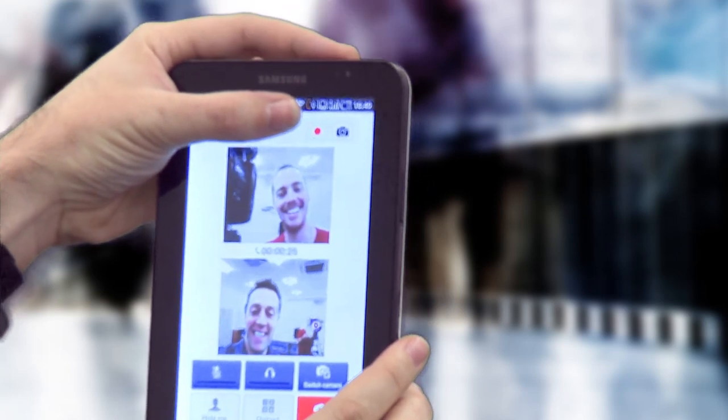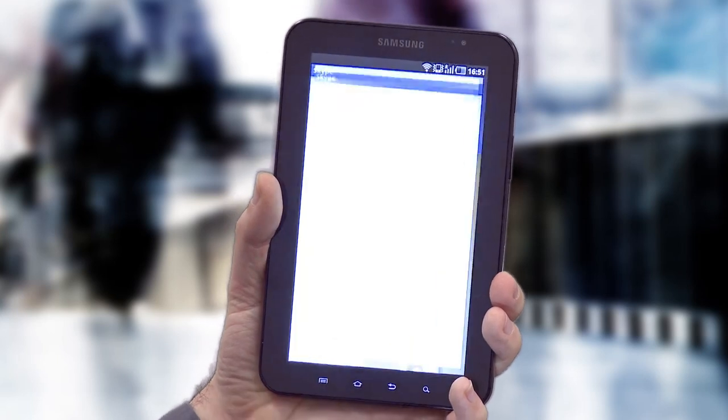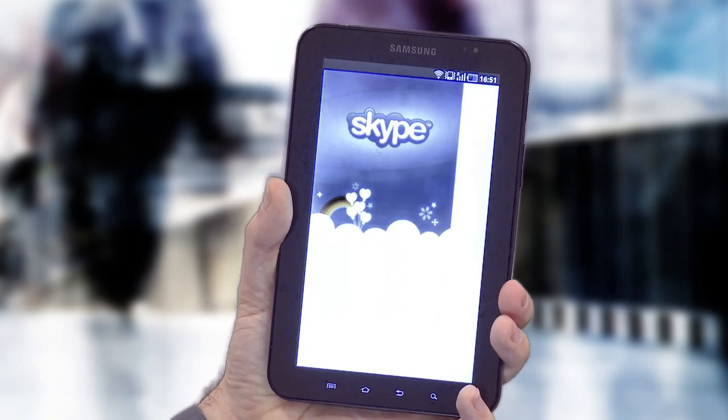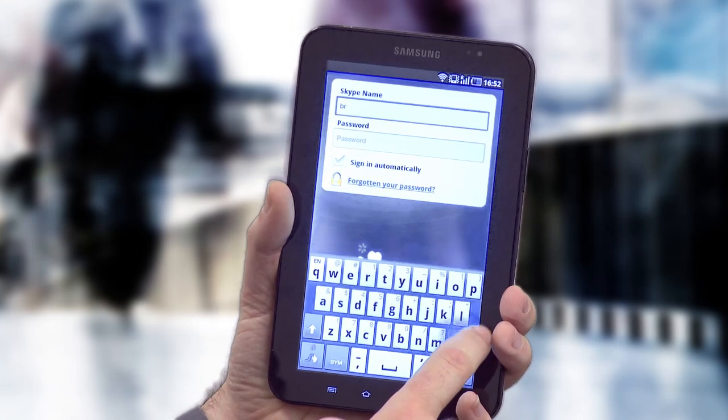Thanks to its front-facing camera, you can also make video calls over 3G to other phones that have video calling enabled. There is a Skype application on Android. That's currently only voice. It's not yet video, although I'm sure that will come very soon.